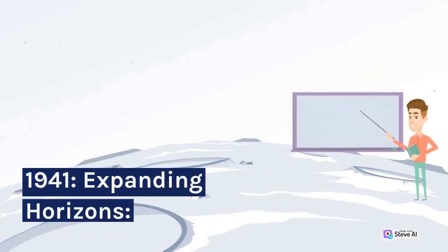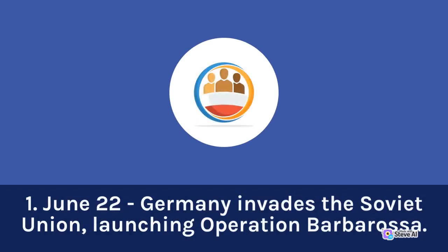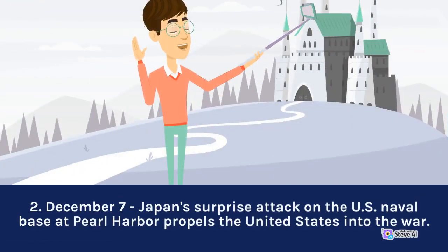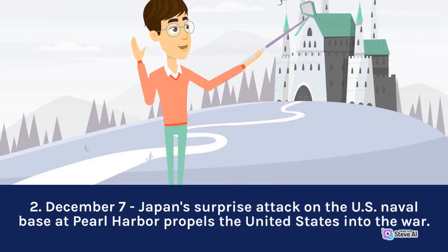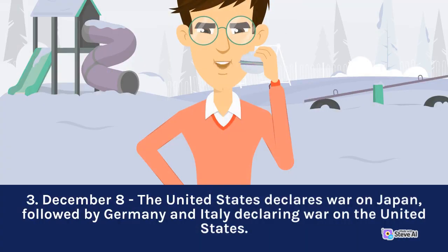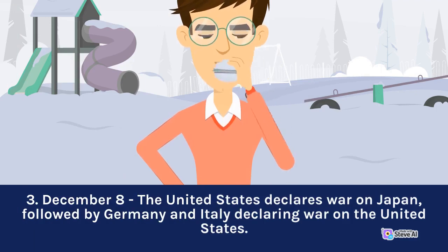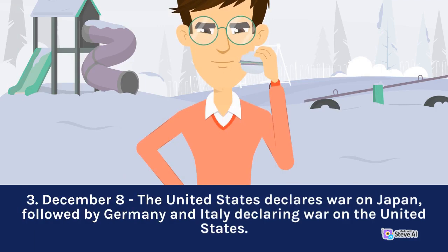1941 — Expanding Horizons: June 22, Germany invades the Soviet Union, launching Operation Barbarossa. December 7, Japan's surprise attack on the U.S. naval base at Pearl Harbor propels the United States into the war. December 8, the United States declares war on Japan, followed by Germany and Italy declaring war on the United States.